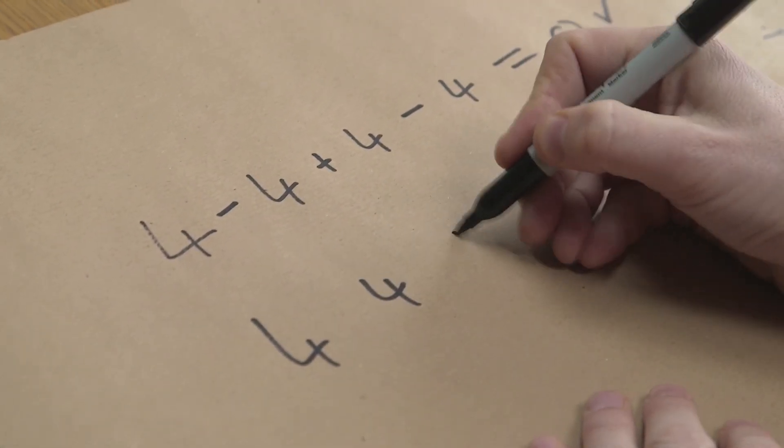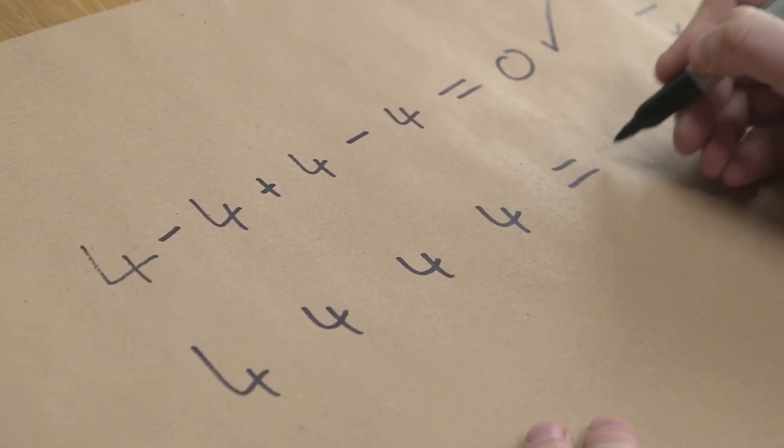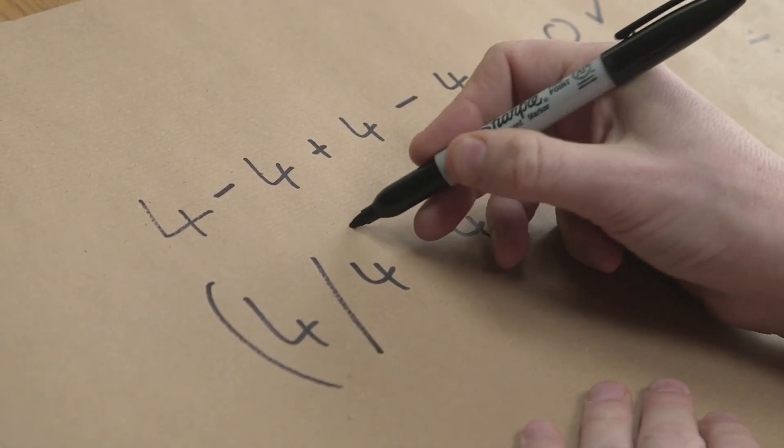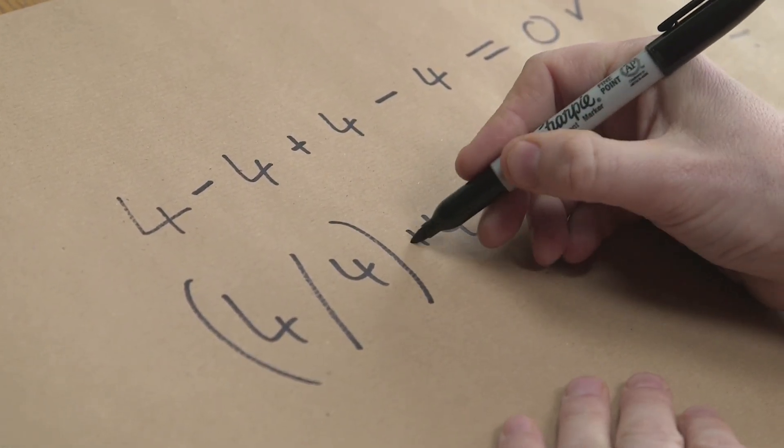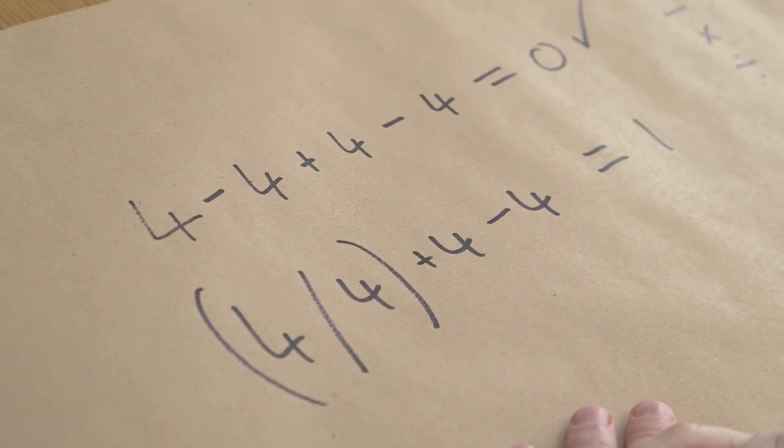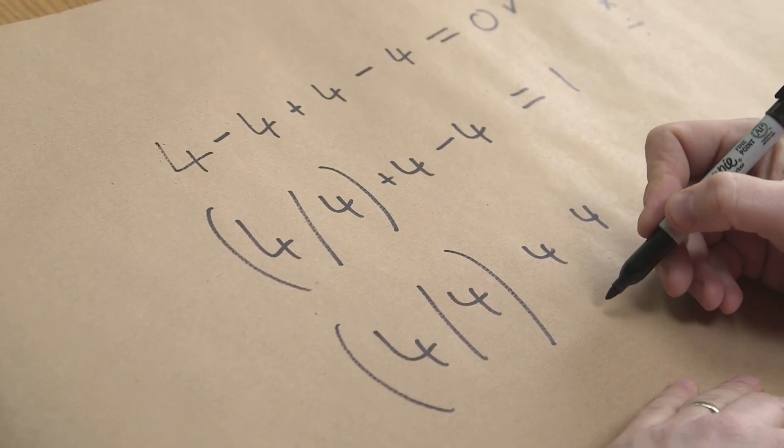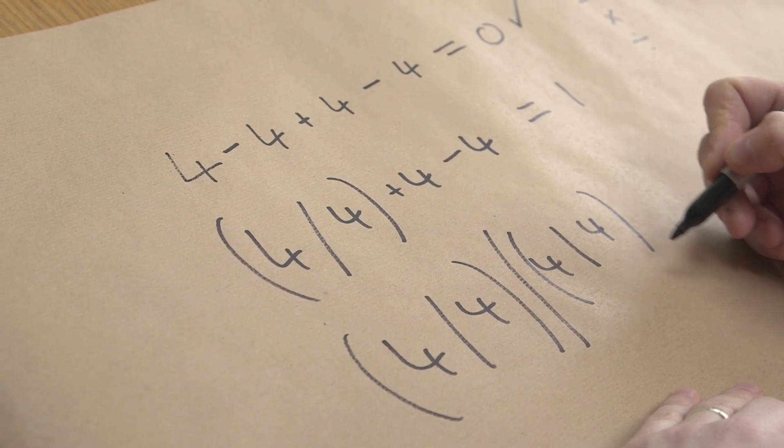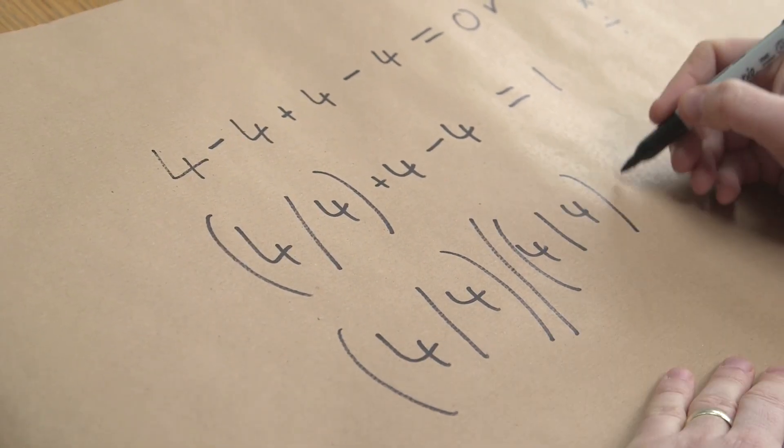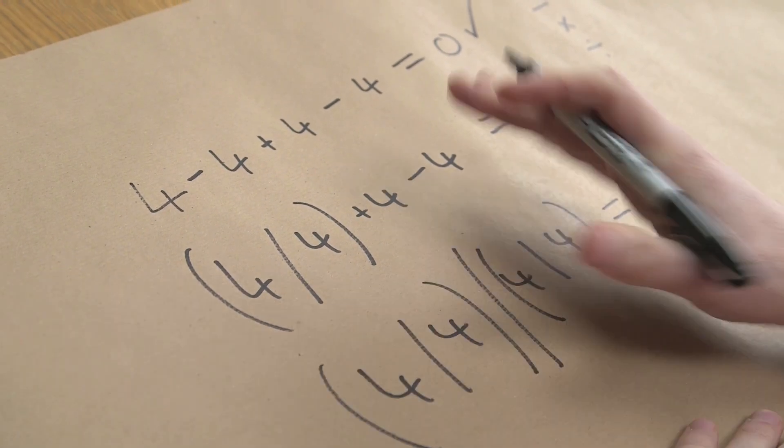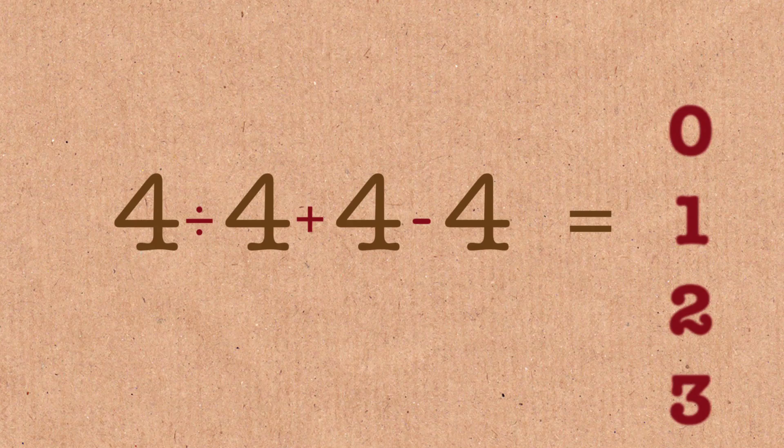Okay let's put the four fours again to equal one. Well we could do four divided by four, now that's one, plus four minus four, or we could have done four divided by four divided by four divided by four, which is one divided by one, which is one. There are lots of different ways, and they get a little bit more complicated.